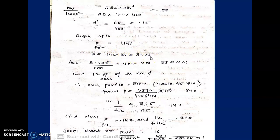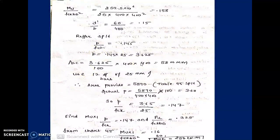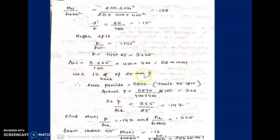3.625% is acceptable theoretically; practically you should restrict to 2.5%. Area of steel = 3.625% × 400×400 = 5800 mm². Using 12 bars of 25 mm diameter gives Ast provided = 5890 mm², which is greater than 5800 mm² — hence acceptable.